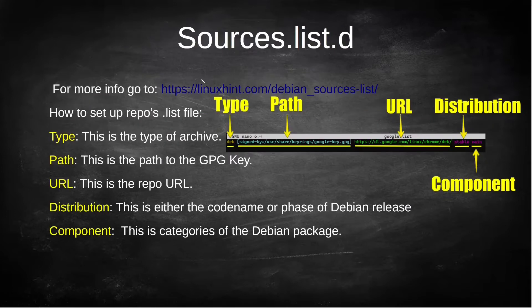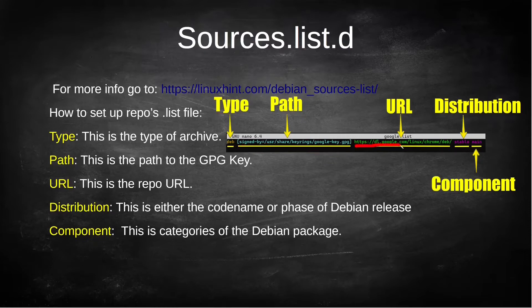With the repository URL going inside of /etc/apt/sources.list.d, whenever you're actually setting this up there are a few things you have to know: the type, which is most often going to be 'deb'; the path, which is going to be the path of your GPG key; the URL, which is just the URL of the repository; the code name or phase of the Debian release; and the component, which is the category of the Debian package.